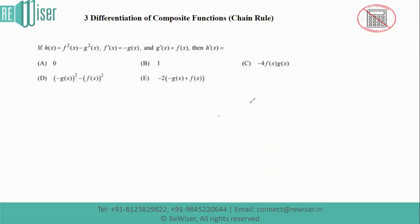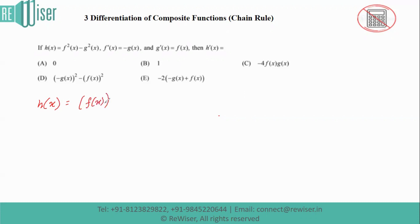This question is on differentiation of composite functions and we will be using the chain rule of differentiation to solve it. In this question, h(x) is given as f²(x), which is the same as f(x) whole square, minus g²(x).